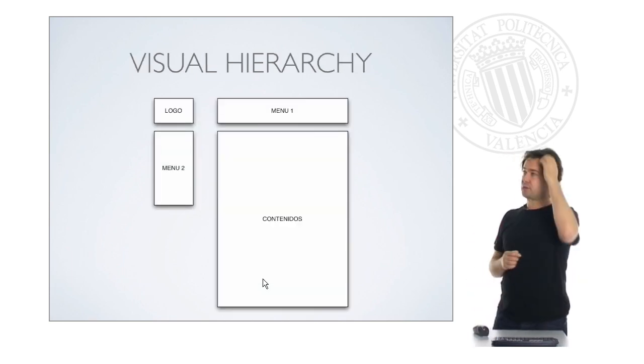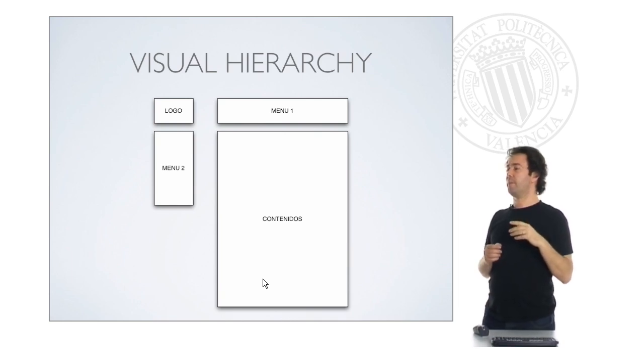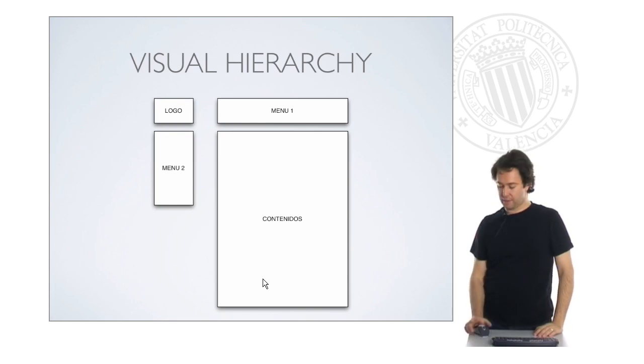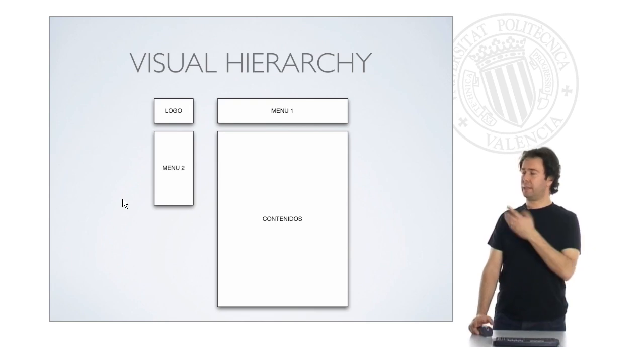Another example is the visual hierarchy, in which the layout is giving you a lot of information of how different things relate to each other. Let's see this example. This is a very simple example, a schematic example, of a typical layout for a website. Here, you have some region with some kind of logo. We have a region like this, with some menu, some contents here, and we have another menu here.